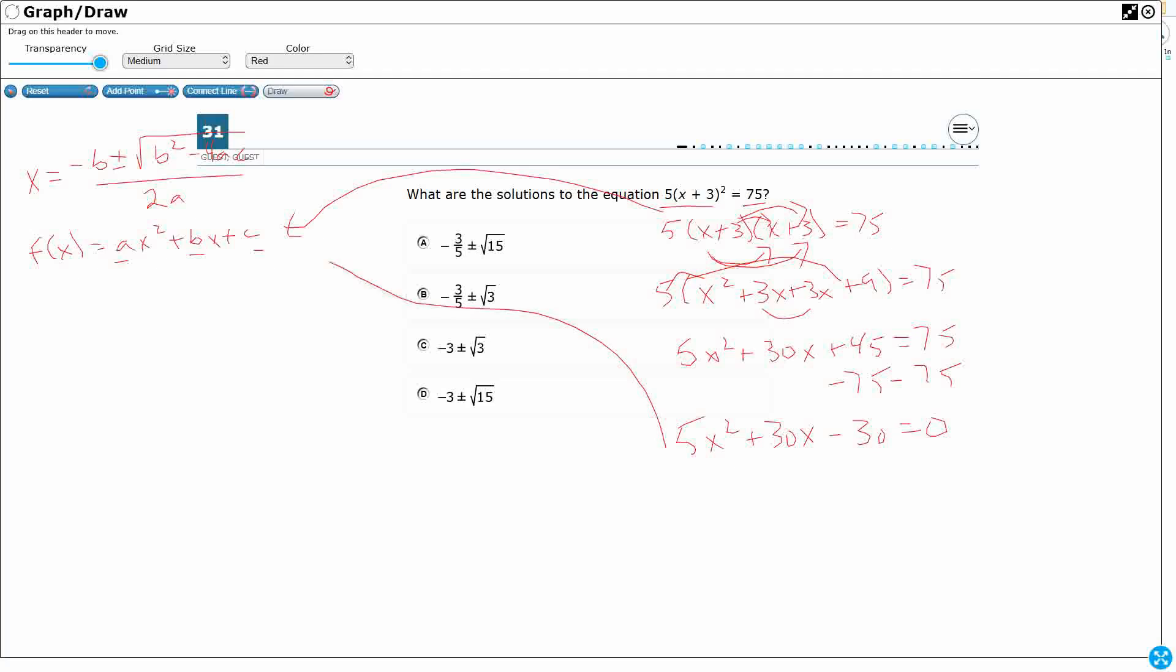Now finally, I've got something that looks like this. So I can say my a equals 5, my b equals 30, and then my c equals negative 30. And I can plug that into this thing right up here. So I can say my negative b is negative 30 plus or minus b squared. So that's 30 squared minus 4 times a is 5 times c is negative 30 over 2a, which is 2 times 5.